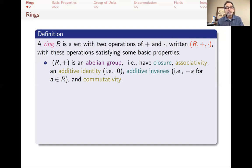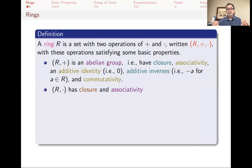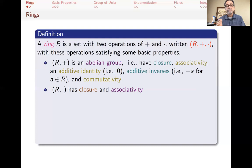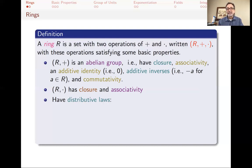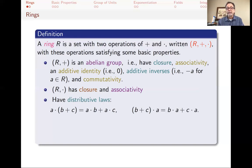The existence of additive inverses also allows us to do subtraction in a ring. With multiplication, we ask for much less — only closure and associativity. If you have two elements A and B, A times B should be in your set, and multiplication should be associative: A times (B times C) equals (A times B) times C. We also need distributive laws to connect multiplication and addition: A times (B plus C) equals AB plus AC, and (B plus C) times A equals BA plus CA.